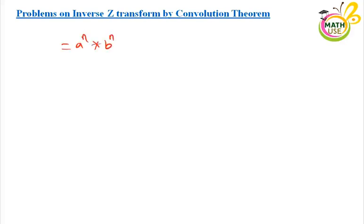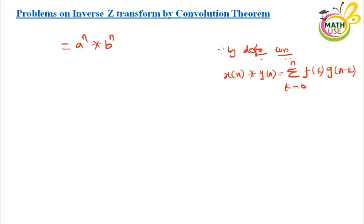By applying the definition of convolution, x of n star y of n equals summation k equal to 0 to n of f of k times g of n minus k. Applying this here: the first function is a to the power n, written as a to the power k; and the second function is b to the power n, written as g of n minus k, which becomes b to the power n minus k.